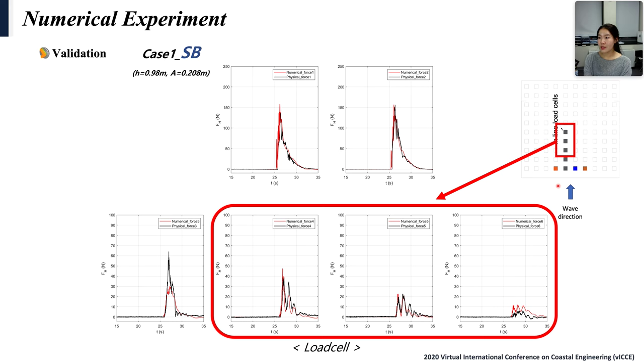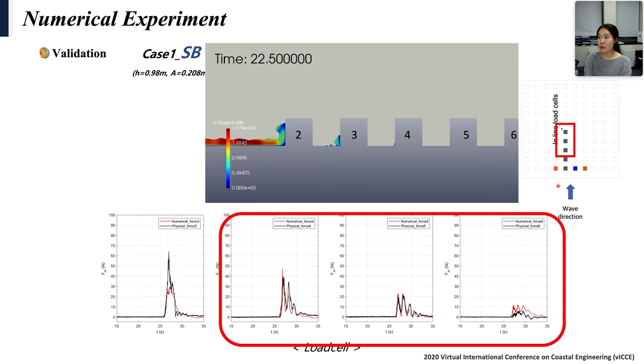Interestingly, it was observed that there are some fluctuations in the results of load cell 4 to 6. And the detailed simulation was confirmed like that. In there, reflected waves hit the structures after the previous wave hit.